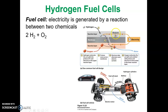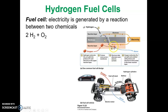The electron flows in one direction, and that creates electricity. After that flow has started, the electron returns to the other side of the reaction layer, where each oxygen atom combines with the hydrogen proton and the hydrogen electron. The end result is water — H2O.